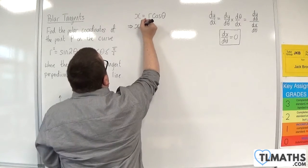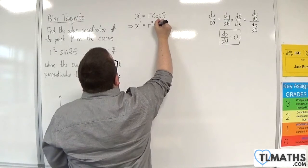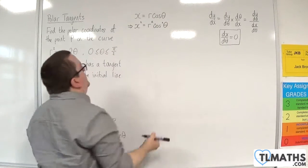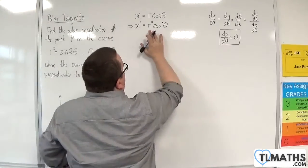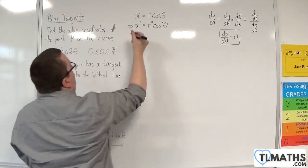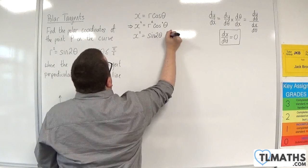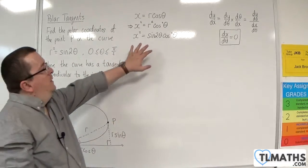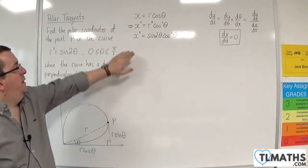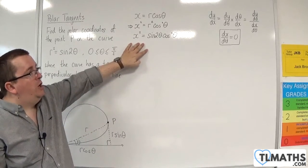So x² = r² cos²θ — squaring everything. Now I need to replace r² with sin(2θ), so x² = sin(2θ) cos²θ. Now I need to get dx/dθ, but I don't have x equals something directly, so I'm going to have to differentiate this implicitly.